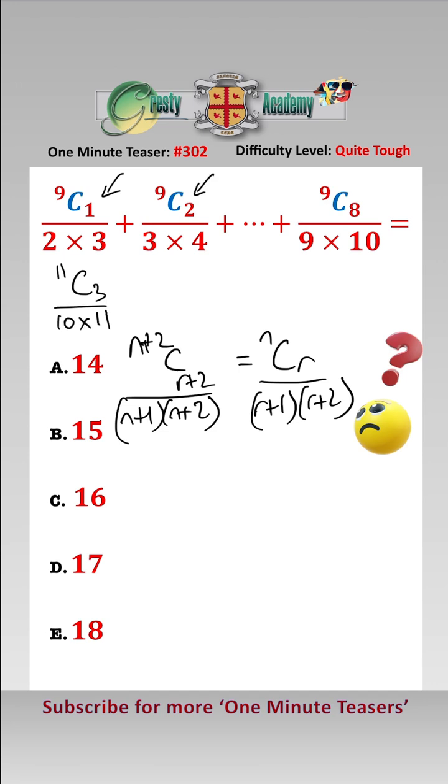Putting n equals 9 and r equals 2, we get 11C4 over 10 times 11, and putting n equals 9 and r equals 8, we get 11C10 over 10 times 11.